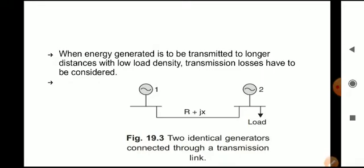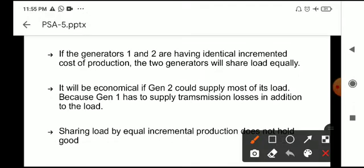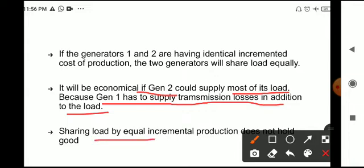Here we can see two identical generators connected to a transmission link. Normally, if generators one and two have identical incremental cost of production, the two generators will share load equally. However, it would be uneconomical if generator 2 supplies most of its load because generator 1 has to supply transmission losses in addition to the load. So sharing load by equal incremental production cost does not hold good in this case while we are considering losses.